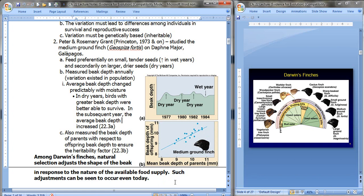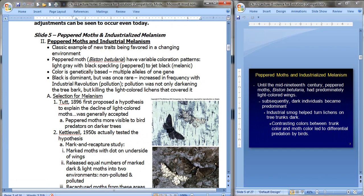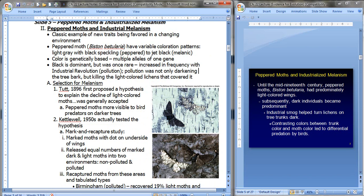Let's look at another example. Peppered moths. This is another classic example of evolution that's been observed in nature during a human's lifetime. Peppered moths and industrial melanism. This is a classical example of a new trait being favored in a changing environment. The peppered moths, shown here, have variable color patterns in nature, from light gray to black, here's the light gray one, depending on which set of pigments they received. So when they're black speckling, they're peppered. If they're jet black, they're melanic. The color is genetically based, and they have multiple alleles for just the one gene. Black is dominant, but was once rare. It actually increased in frequency during and with the industrial revolution, which of course caused pollution to come up. Pollution was not only darkening the tree bark, but actually killing the light colored lichens that covered it.